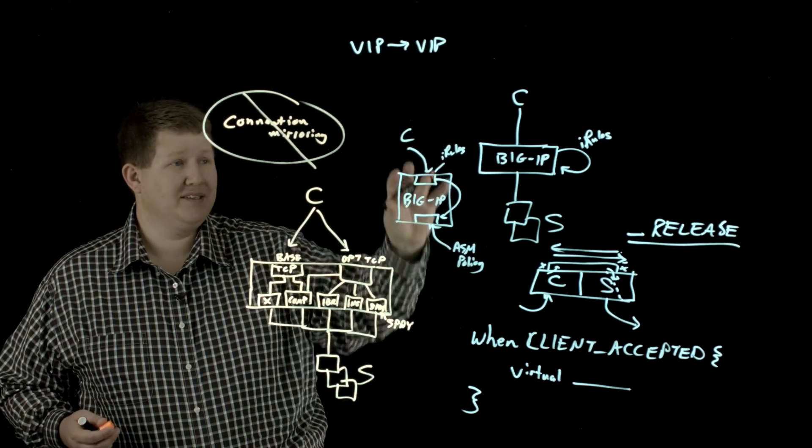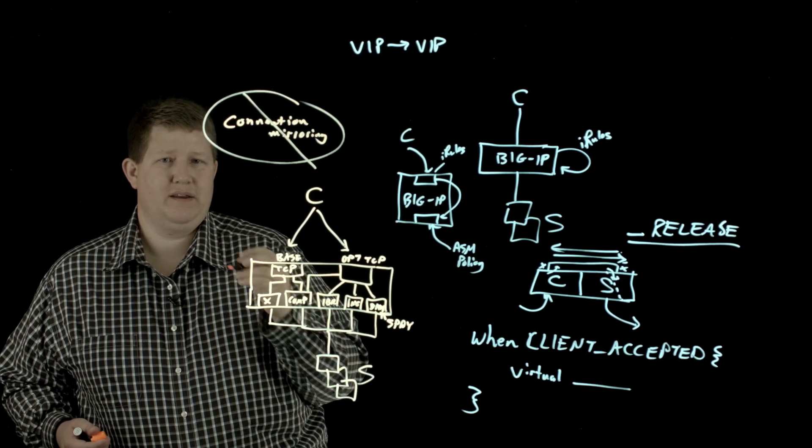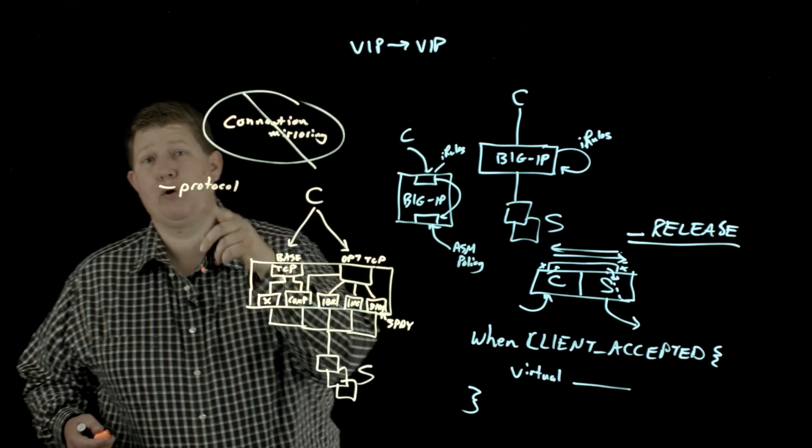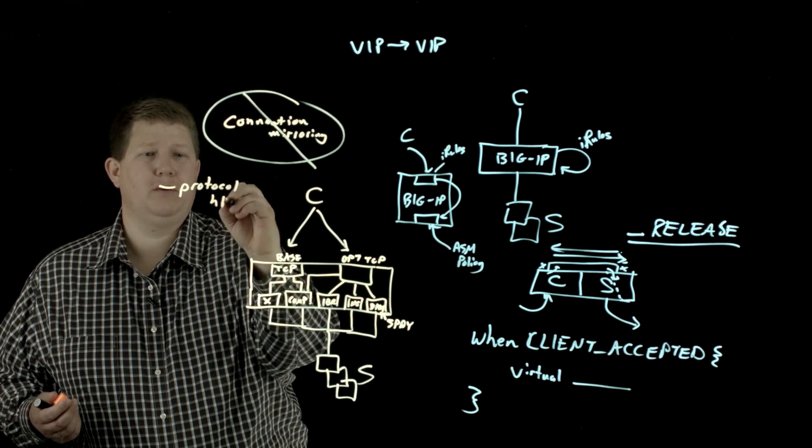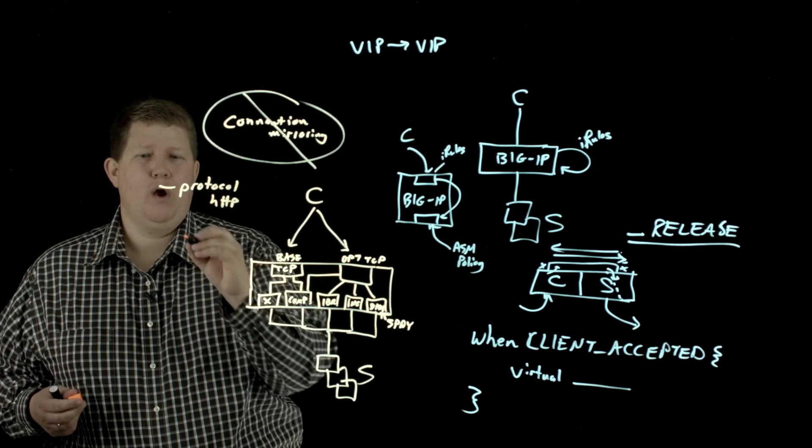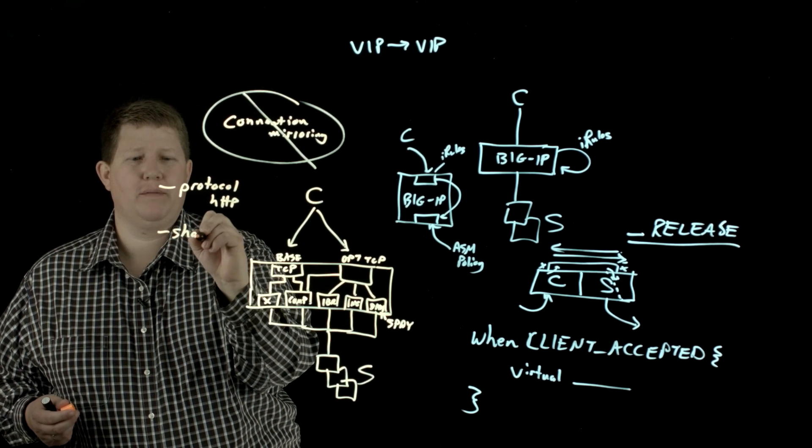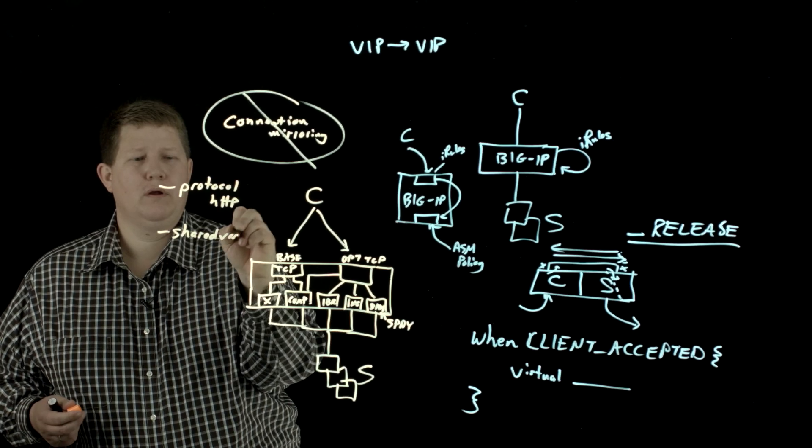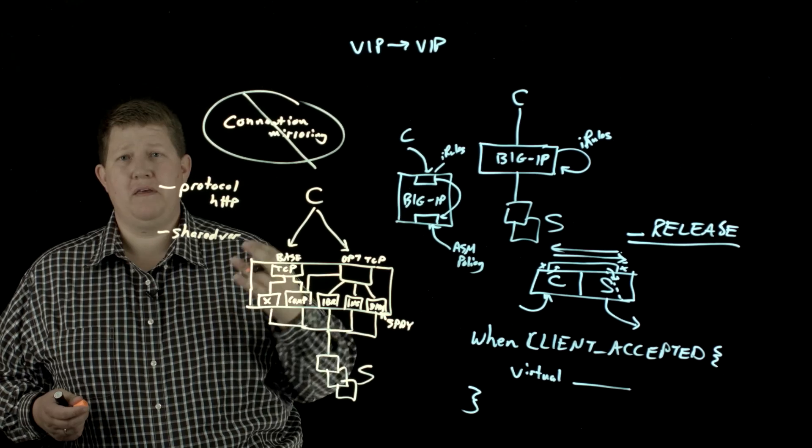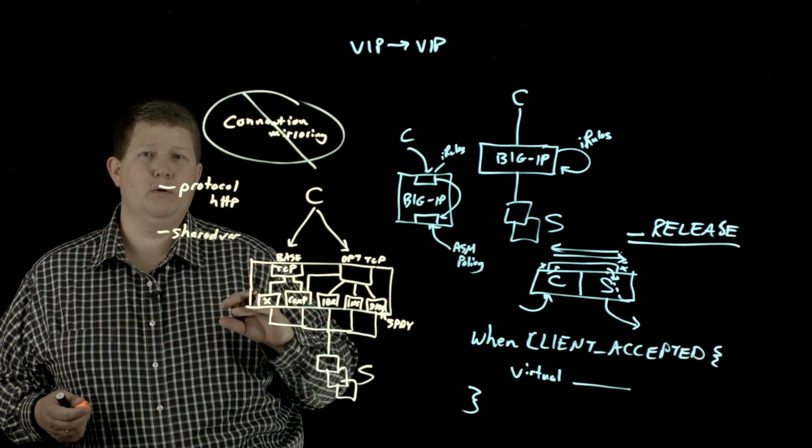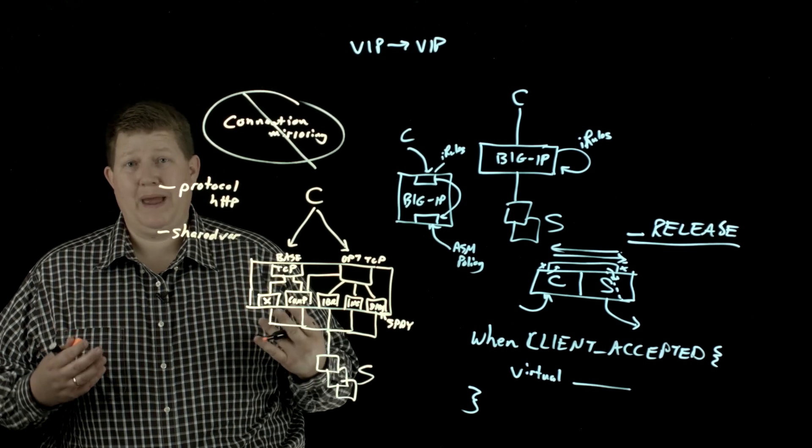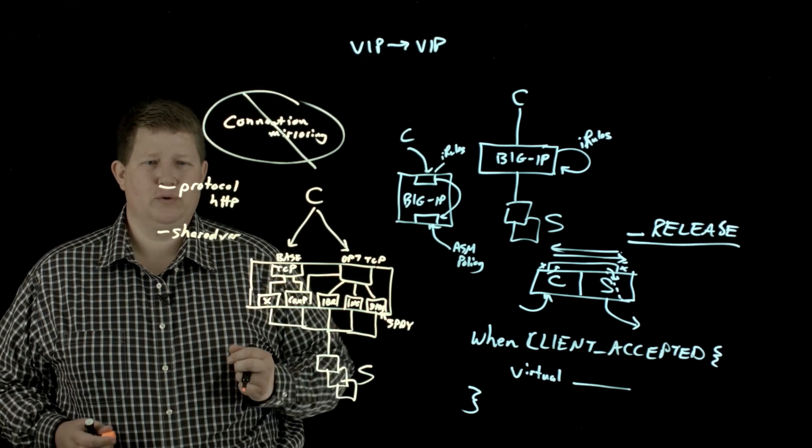One of the things that you can do to pass data from the front side to the back side is if you can use the protocol that you're actually switching. So if it's HTTP, you can use headers and cookies to pass from front to back and back to front, or you can use the shared VAR command in iRules. And what that allows you to do is you can set a variable using the shared VAR and then that variable is accessible to you on the back side of the front side of anywhere you set it. And you can pass data that way between virtuals.